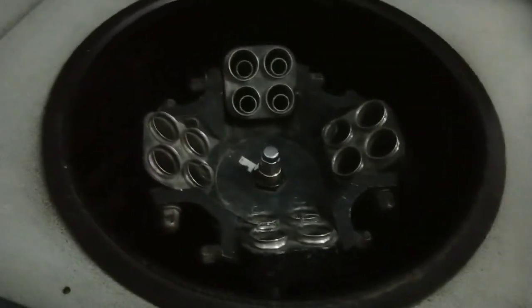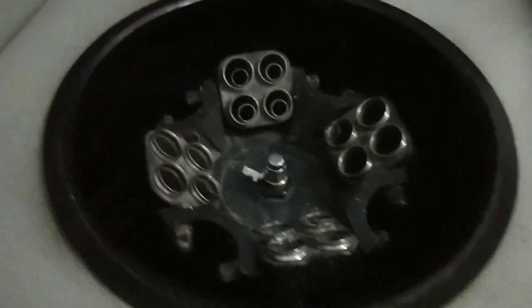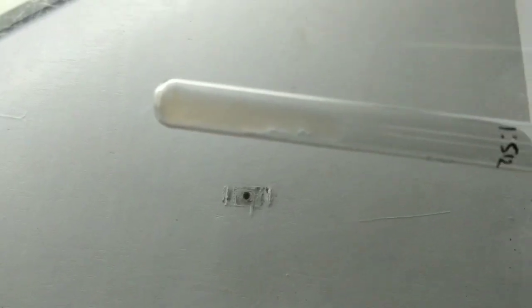Centrifuge all tubes at 1000 RPM for 1 minute. After centrifugation, read the most diluted tube first and check the other tubes.